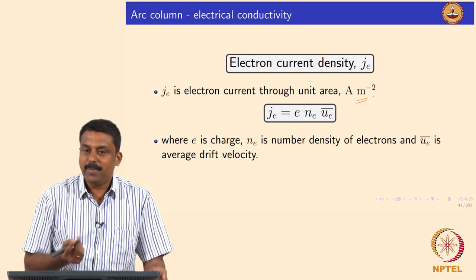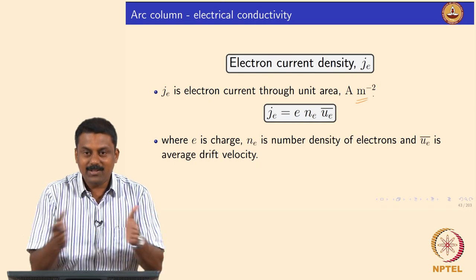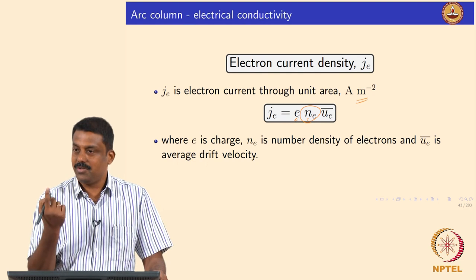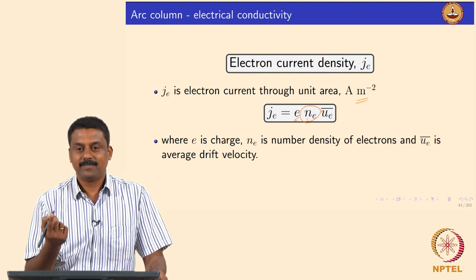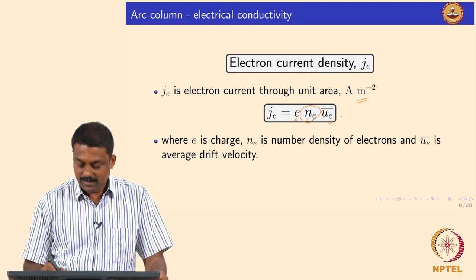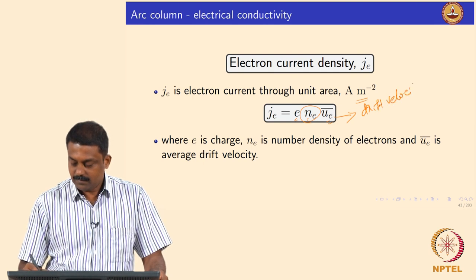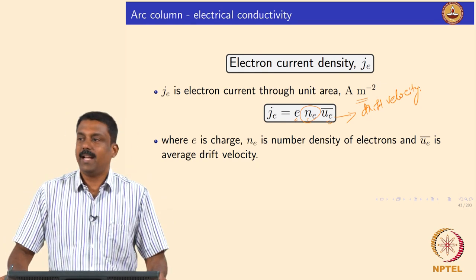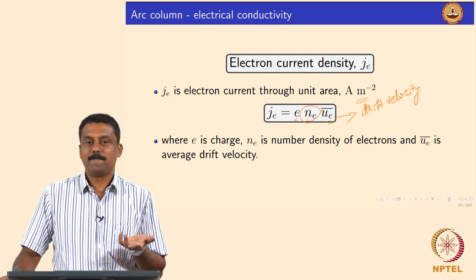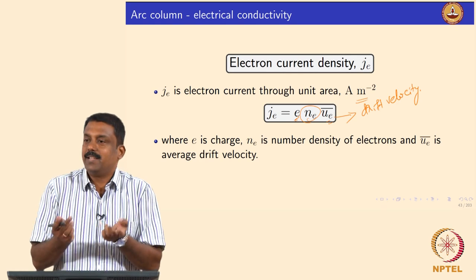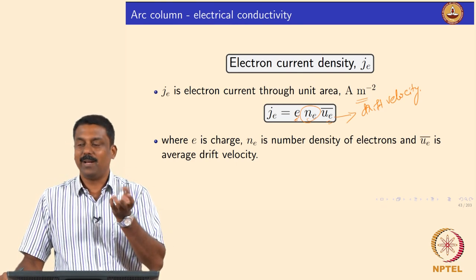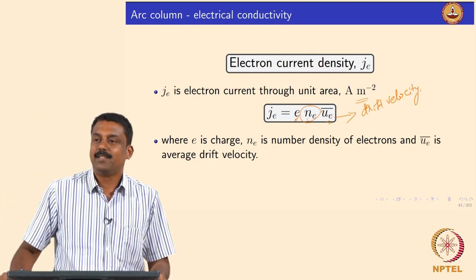Current means the electrons are traveling, so we need their velocity. The electron current density j_e is: the number density of electrons n_e, times the electron charge e, times the drift velocity. So current is simply how many electrons you have, times how fast they travel, each carrying charge e. The charge is transported by a given number of electrons moving at a given drift velocity.